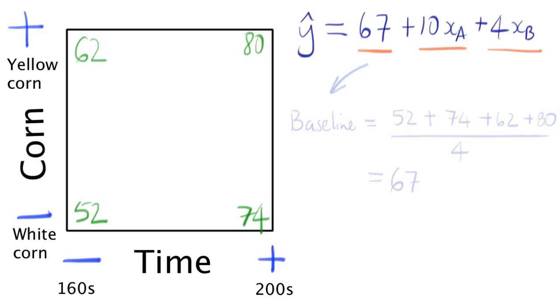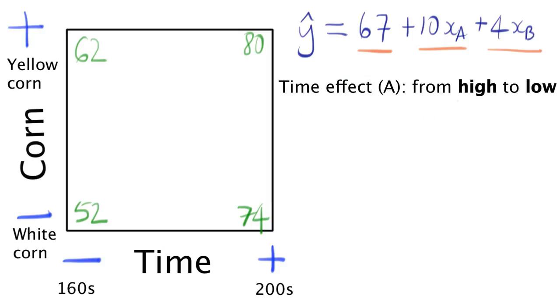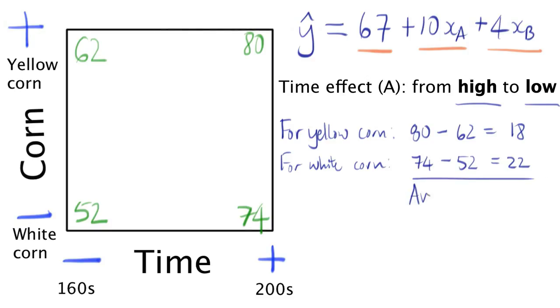How did we get the value of 10? That is the effect of cooking time. Always go from high to low. The difference from high to low using yellow popcorn is 80 minus 62, and that's 18. The difference from high to low when using white popcorn is 74 minus 52, that's 22. So 18 plus 22, and the average of those two numbers, is 20.